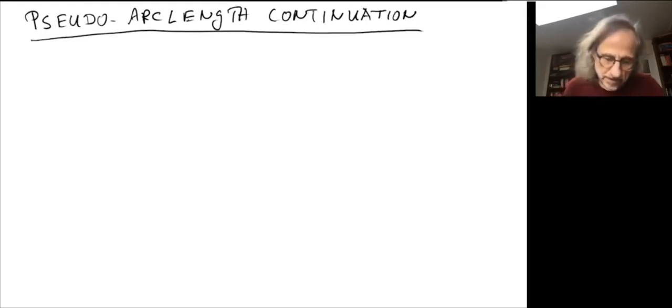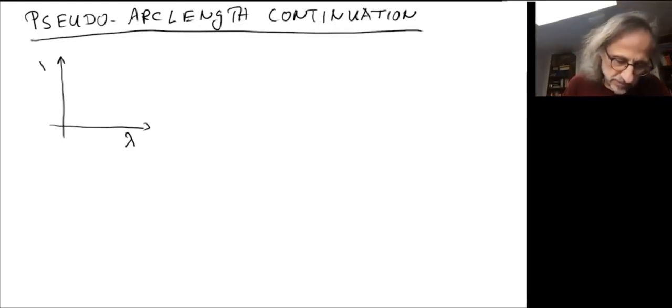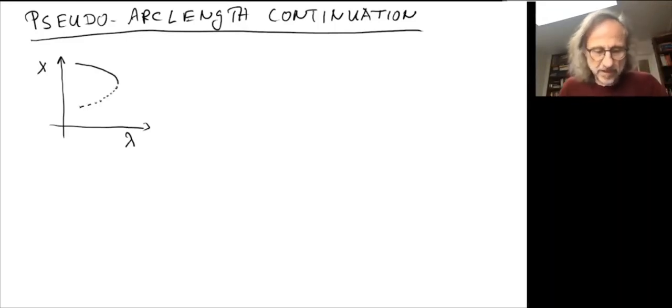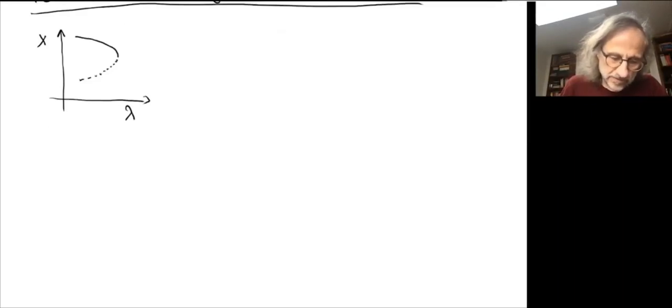Our goal for now is to follow a solution branch along a saddle-node bifurcation. So the picture we have in mind is the following: we have our bifurcation parameter, I'm going to call it lambda now because that's customary in this context. And we have our solution branch and we're thinking of a saddle-node bifurcation where we have a stable branch and an unstable branch, and we'd like to follow these solutions along here.